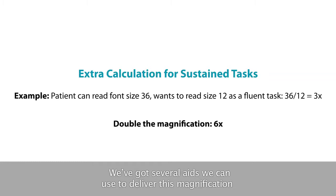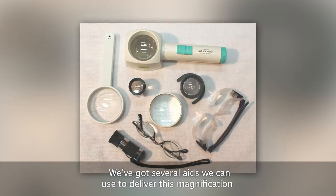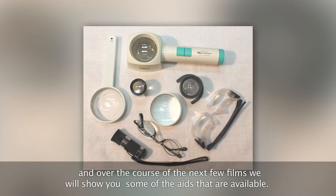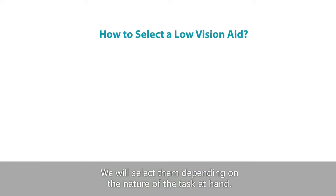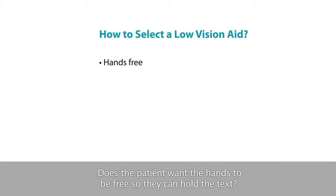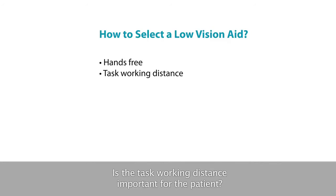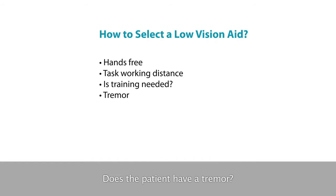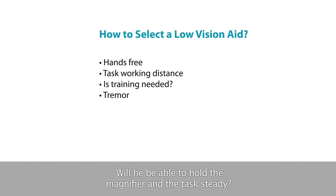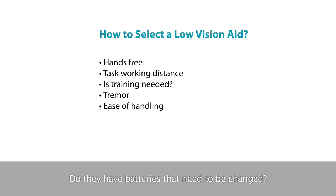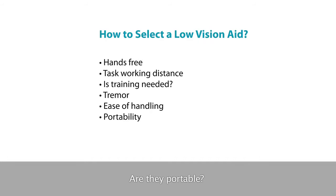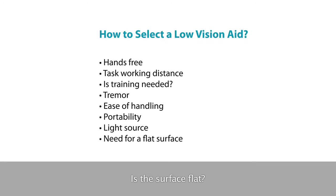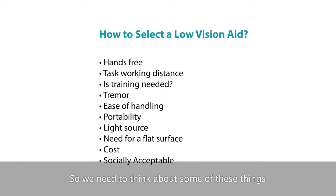We have several aids available to deliver this magnification, which we'll cover in the next few films, selected depending on the nature of the task. Key considerations include: does the patient want their hands free? Is working distance important? Will training be needed, and can the patient manage it? Is the device complicated? Does the patient have a tremor — can they hold a magnifier steady? Does the device need batteries? Is it portable? Does the patient need a lighting source? Is the surface flat? How expensive is it? Is it socially acceptable? We need to think about all of these when deciding which device to use.